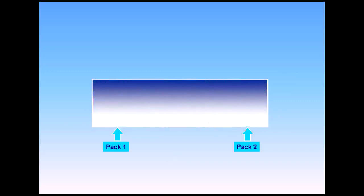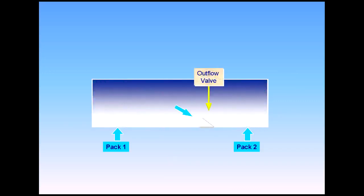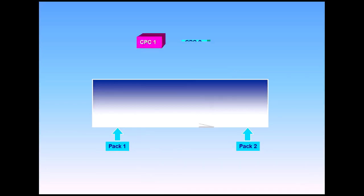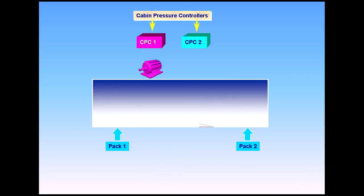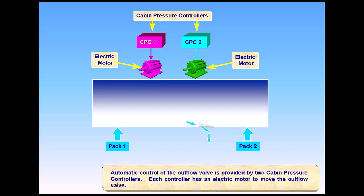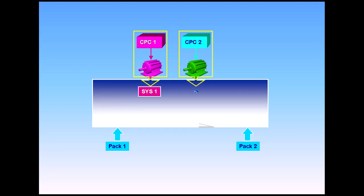An outflow valve is used to regulate the amount of air allowed to escape from the pressurized areas. Automatic control of the outflow valve is provided by two cabin pressure controllers. Each controller has an electric motor to move the outflow valve. A controller-motor combination is known as a system. Only one system will operate at any one time, with the other system acting as a backup.